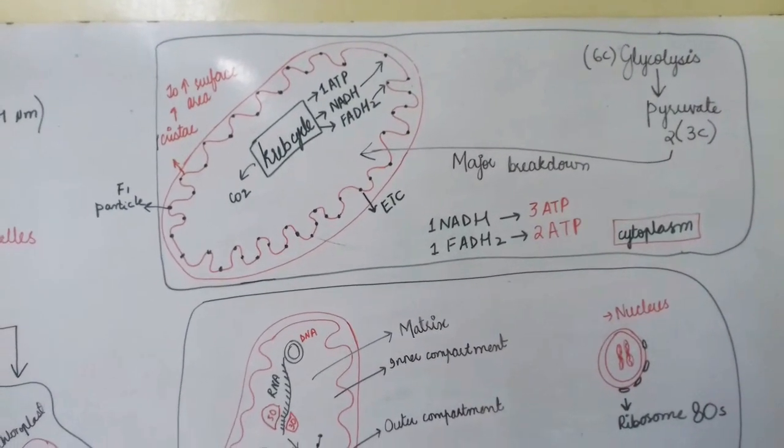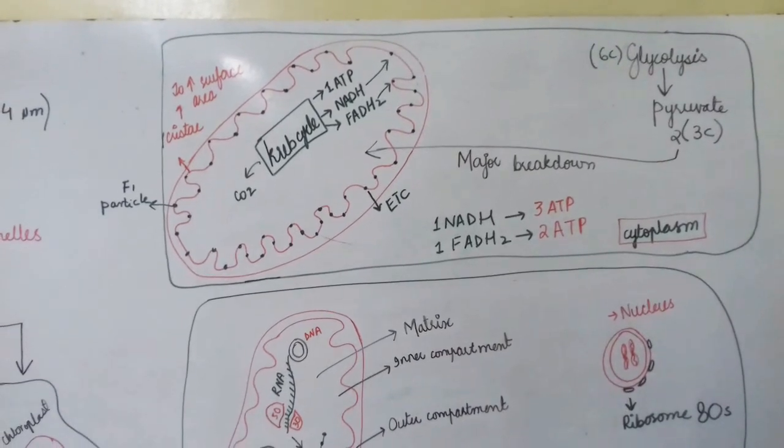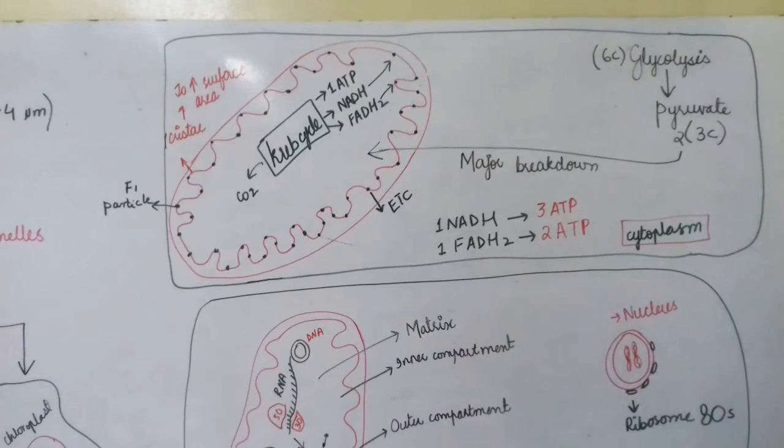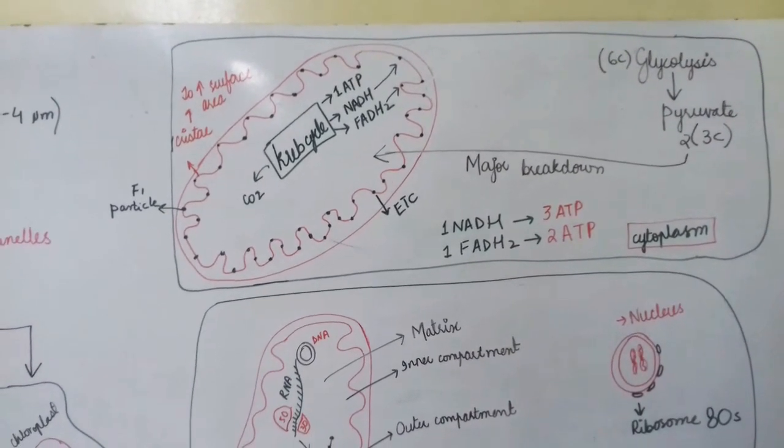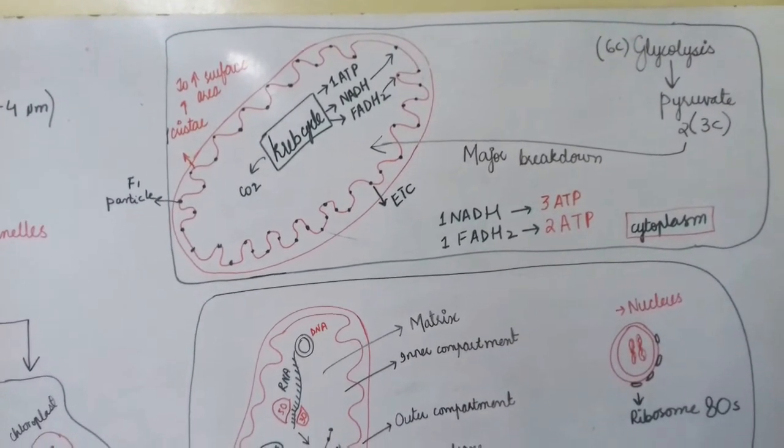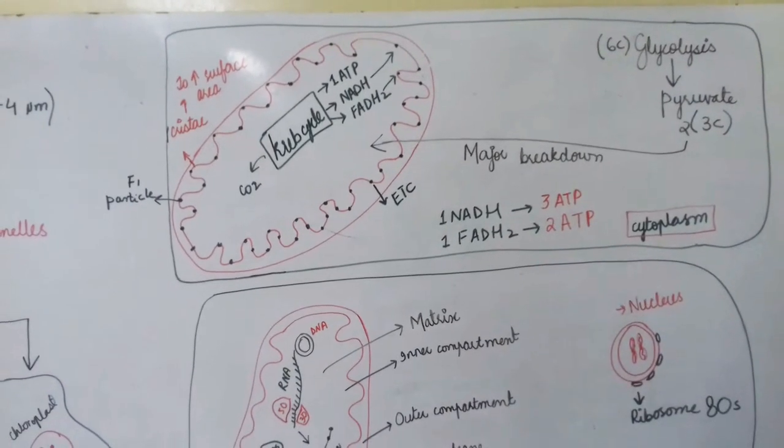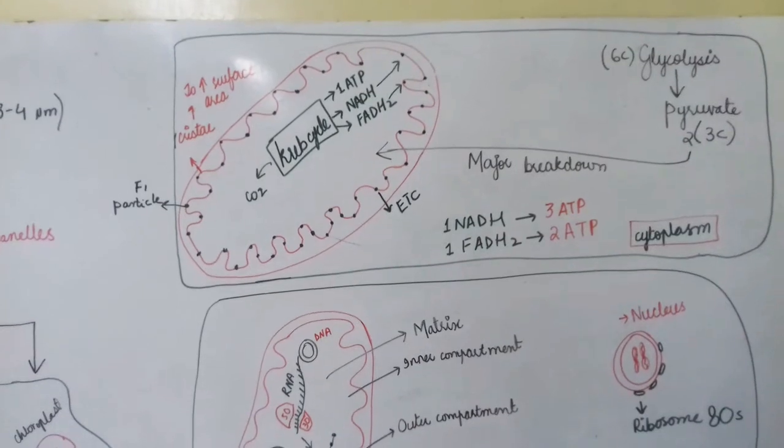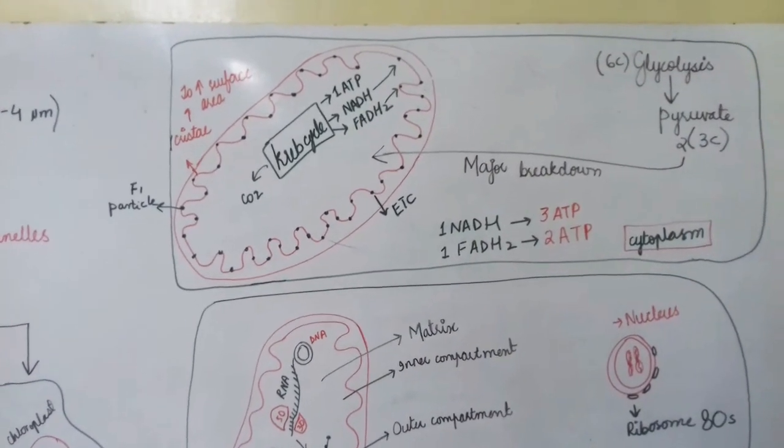What does cristae do? Mitochondria has a double membrane structure. The outer membrane is rounded form, while the inner is folded. The folding increases surface area for electron transport chain and helps in energy production.